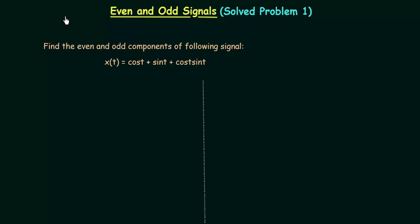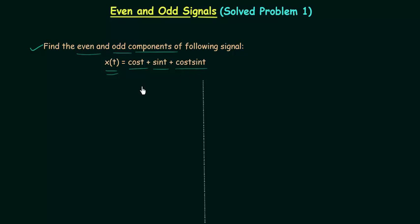In the previous three lectures we have completed everything required in even and odd signals. Using those concepts, we will solve one problem in this lecture. We need to find the even and odd components of signal x(t), where x(t) is equal to cos(t) plus sin(t) plus cos(t)sin(t).